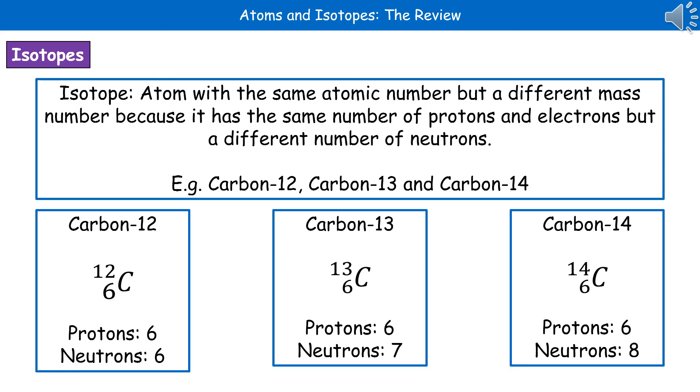So for carbon-12 it's 12 minus 6 gives us 6. For carbon-13, 13 minus 6 gives us 7. Carbon-14, 14 minus 6 which gives us 8.